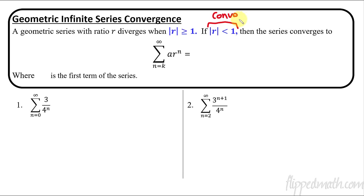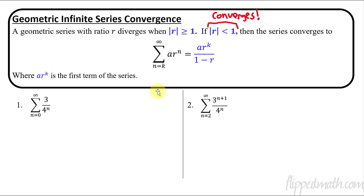When it converges, it converges to a times r raised to k, all over 1 minus r. The numerator a·r^k is just the very first term in the series — whatever number they start with, you plug that k value in. So if k starts at 2, you'd have a·r^2 on top. That is all over 1 minus r, and that tells you what the sum of the infinite geometric series converges to.